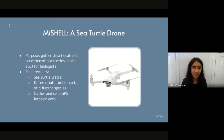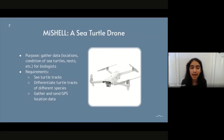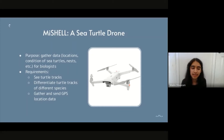Finally, the drone should have a way to gather and send location data, and this should all be done in real time while the drone flies over the beach. I'm particularly focusing on the first two requirements: making the drone see turtle tracks and differentiate tracks between different species. The gathering and sending of GPS location data has more to do with integrating the software with the drone hardware.